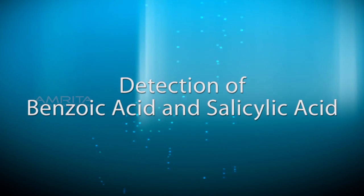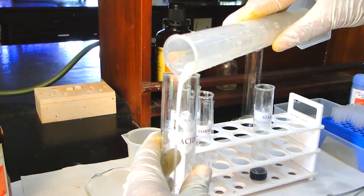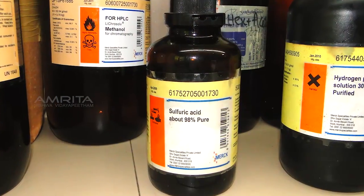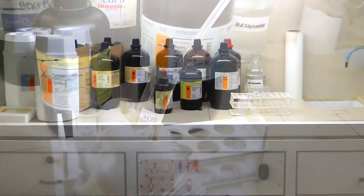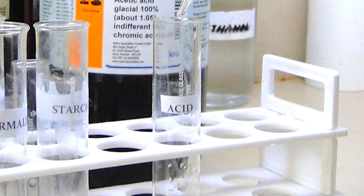Detection of benzoic acid and salicylic acid. Pour 5 ml milk from the beaker into the test tube labeled acid. Add a few drops of concentrated sulphuric acid into the milk and shake the test tube gently. This should be done in the fume hood. You will observe that the milk is getting precipitated.